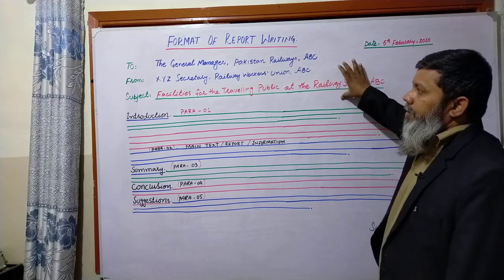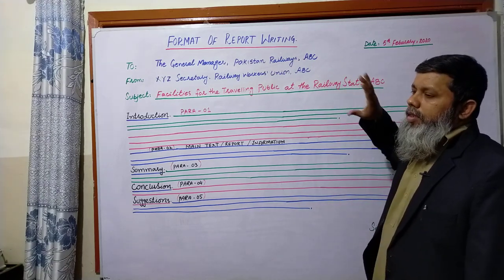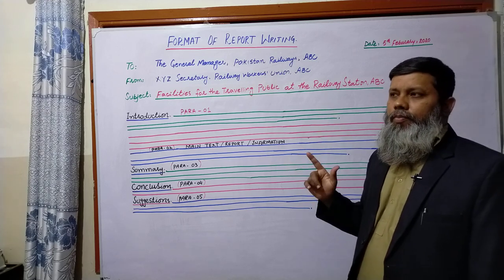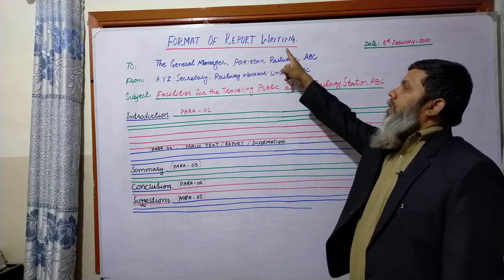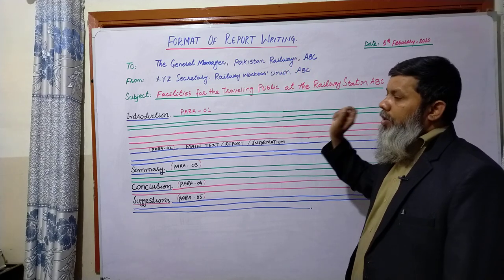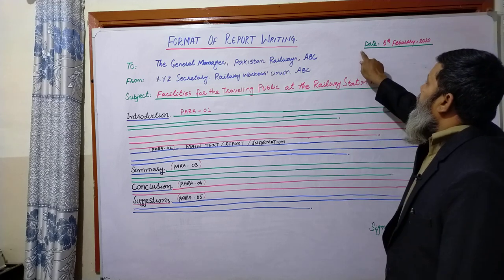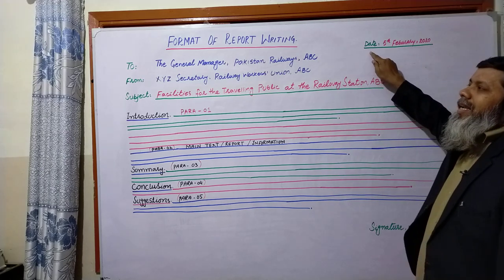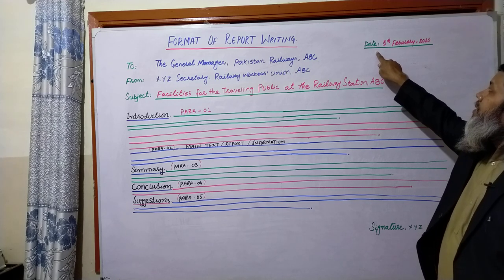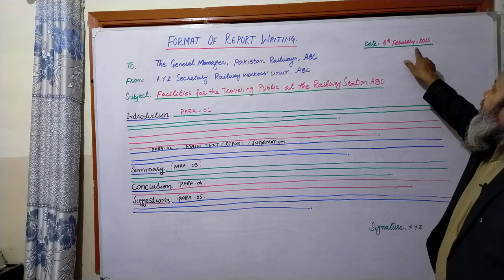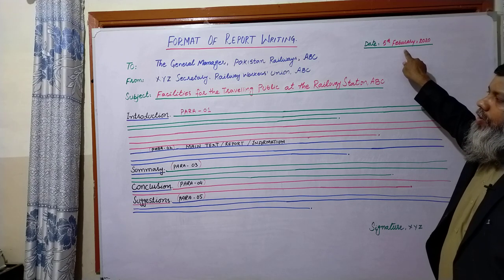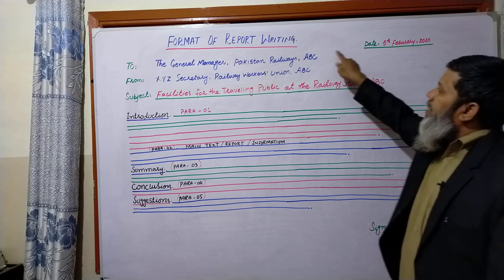As I have already given you the format of an application, today I have the format of report writing — how to write a good report. First of all, at the top of the page on the right-hand side, you will write the date. For example: 5th February, 2020. So date comes first, and then on the next line.